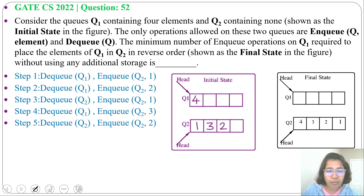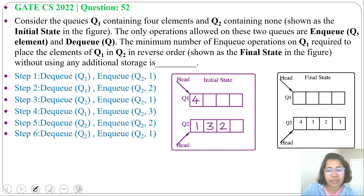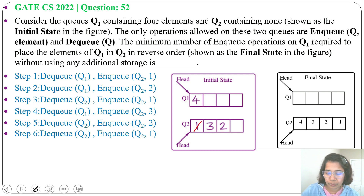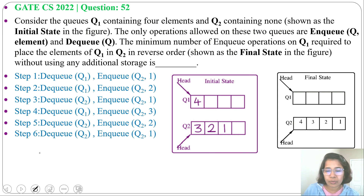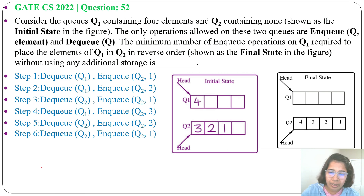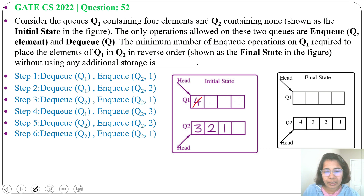One more time, DQ from Q2 and NQ at Q2 — we DQ 1 and NQ 1 back at Q2. After this we get Q2 as 3, 2, 1. Next, we DQ from Q1 and NQ at Q2.